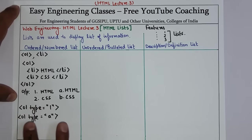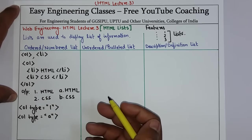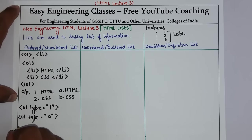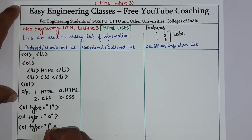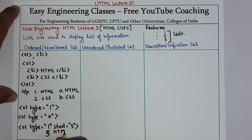So there can be different types of numbering. You can also specify from where to start the number. For example, OL type equals 1 and then specify the property start equals 5. In that case, the output will be: 5. HTML, 6. CSS.